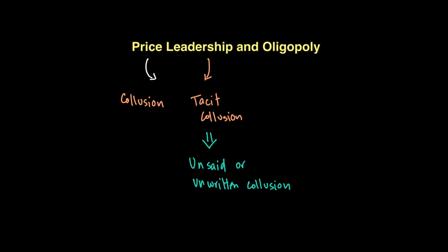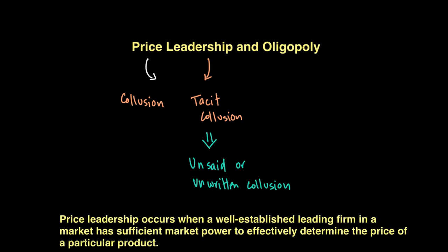Price leadership occurs when an established firm in a market has sufficient market power to effectively determine the price of a particular product. When they do so, they charge that price while the other firms then also follow by charging the same price. The leader sets the price and the quantity at which it will sell the good, and the rest of the firms then compete with each other on the remaining market share that is left behind, but they will only charge the price which is set by the leader.